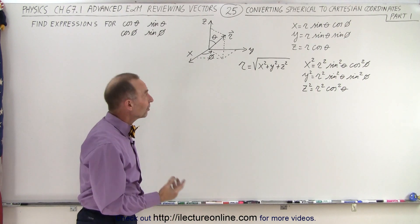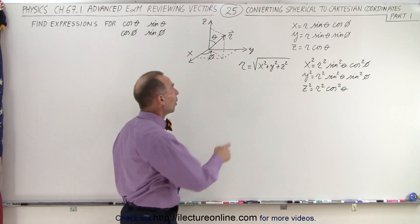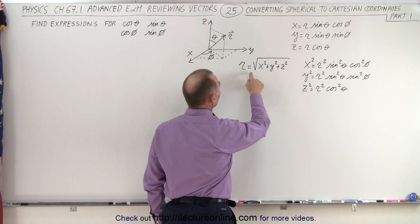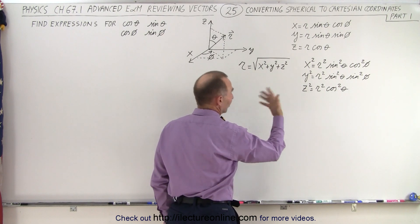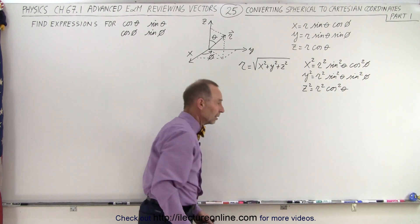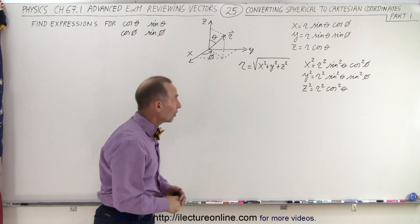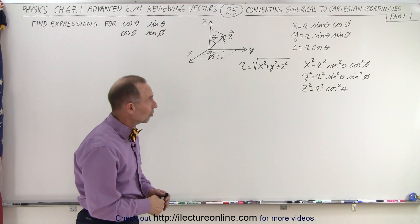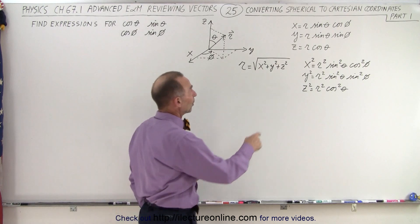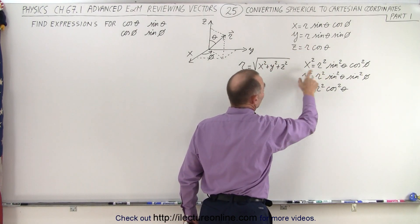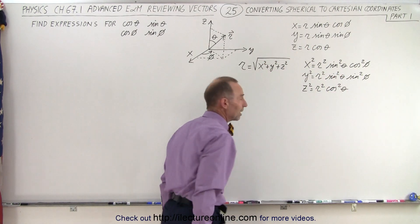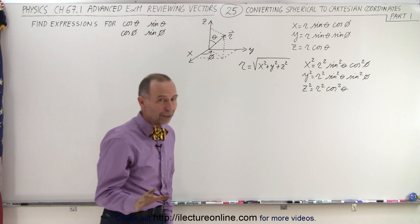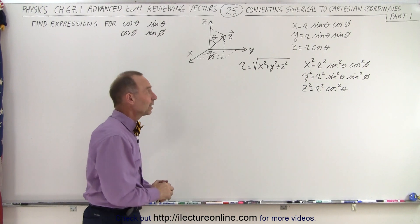Starting out, we can say that r must be equal to the square root of x squared plus y squared plus z squared. That's the Pythagorean theorem in three dimensions, and if we square both sides of these three equations we end up with three squared equations that are going to come in handy.